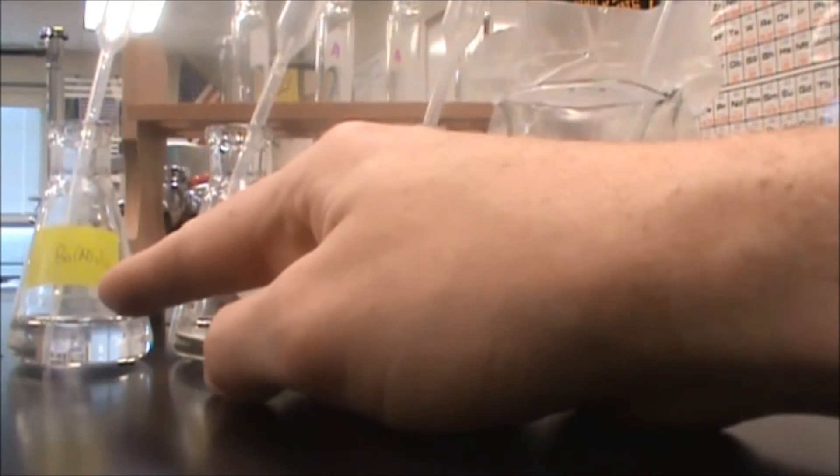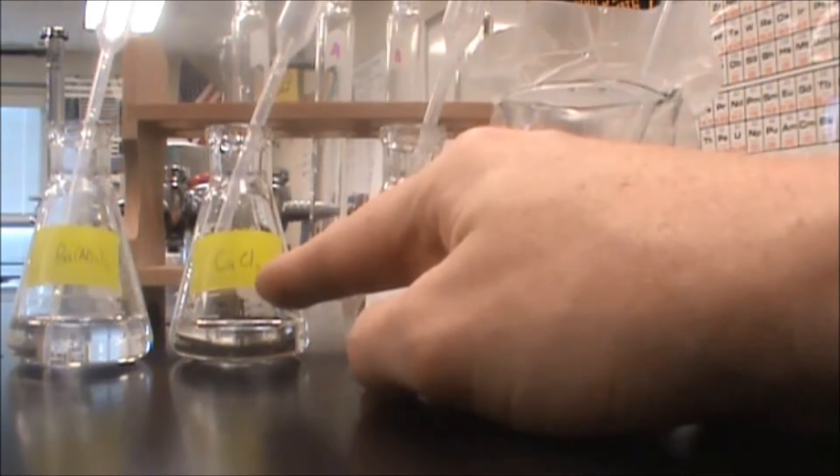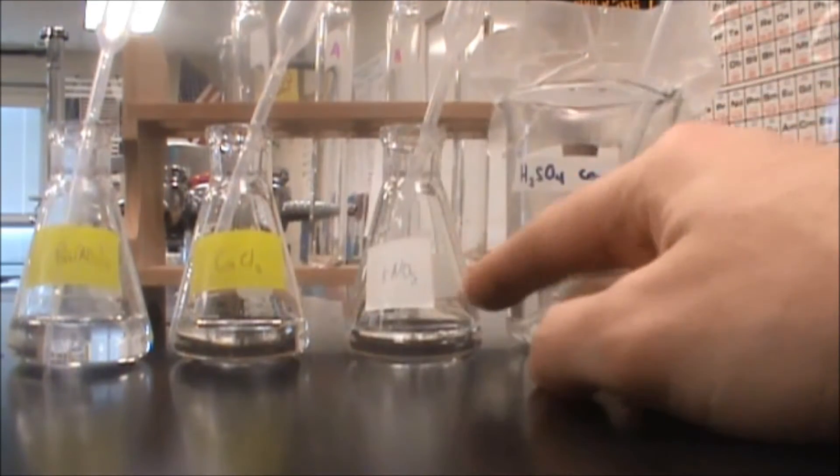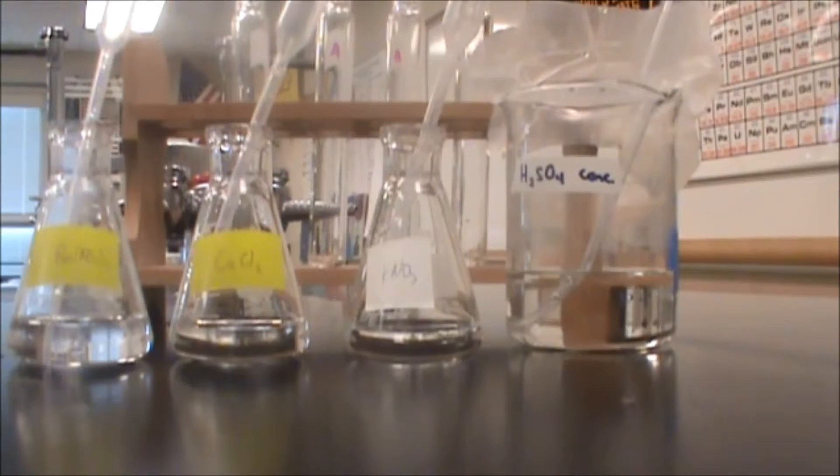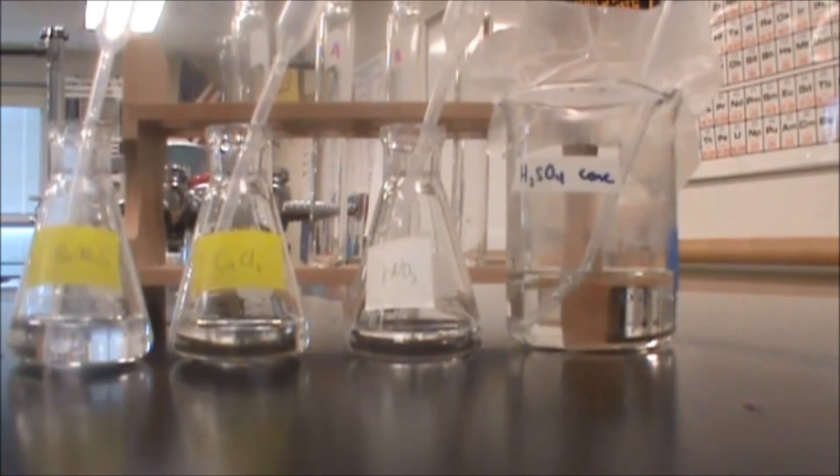So the barium nitrate should give us a positive result, the calcium chloride should give us a negative result, and the potassium nitrate should give us a positive result. The reason why we're doing three is because the barium nitrate and potassium nitrate will have a critical difference between them.